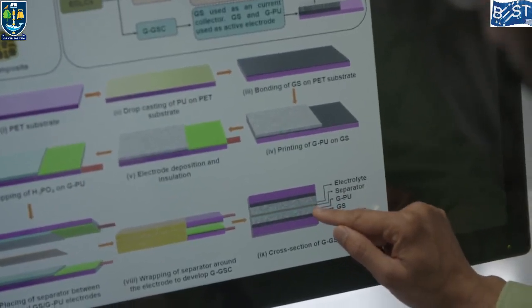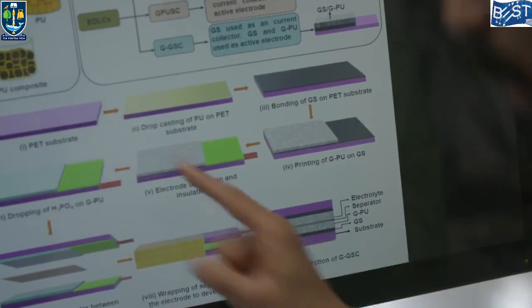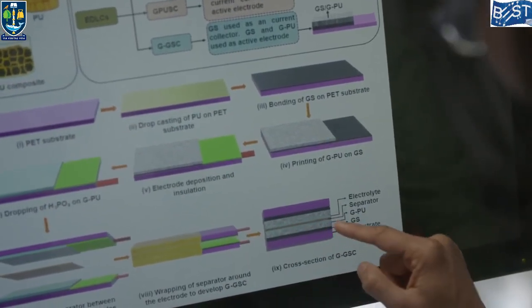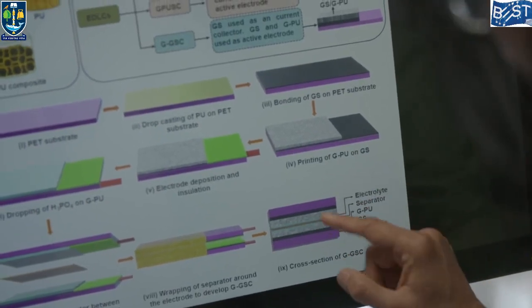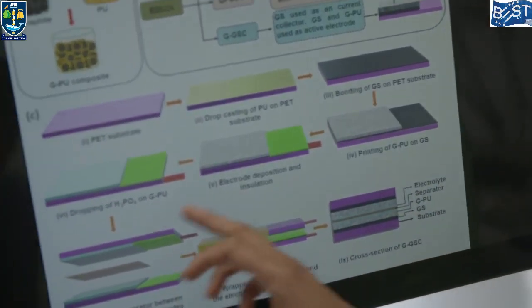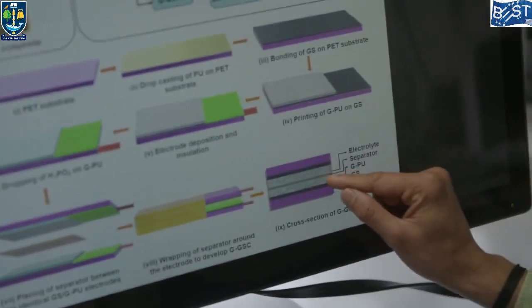Okay. And then here we have a graphite polyurethane resin composite, which we printed. And then in between there is an electrolyte. Okay. And currently we are using here phosphoric acid, H3PO4, and then a separator.